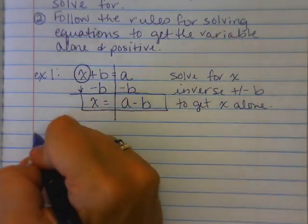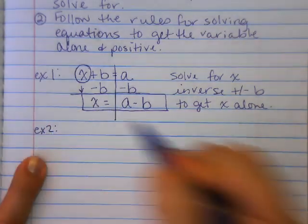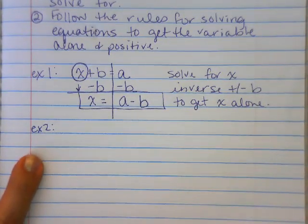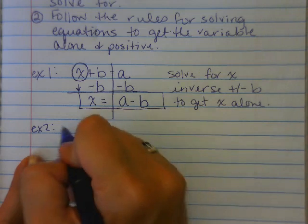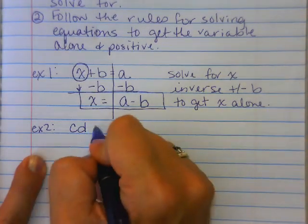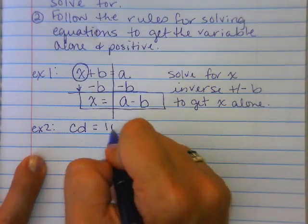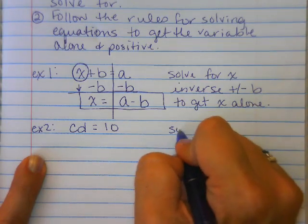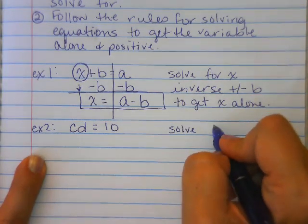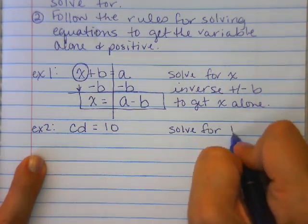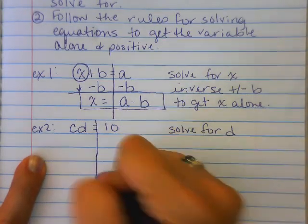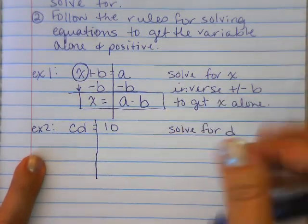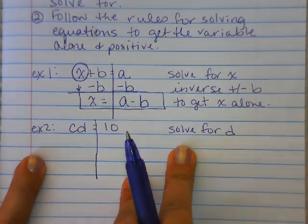So let's try another one. And again, they're going to be fairly simple at the beginning. So for the second one, let's do c times d is equal to 10. So I'm going to give you a number on this one, and I would like you to solve for d. Again, let's go through our steps: no distributing, no like terms, no variables on one side.